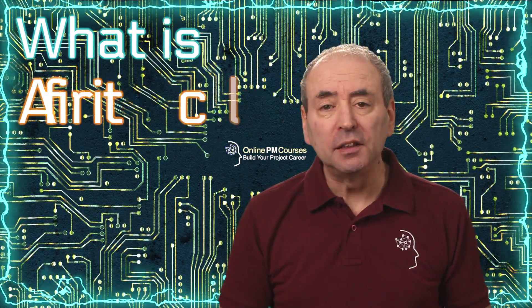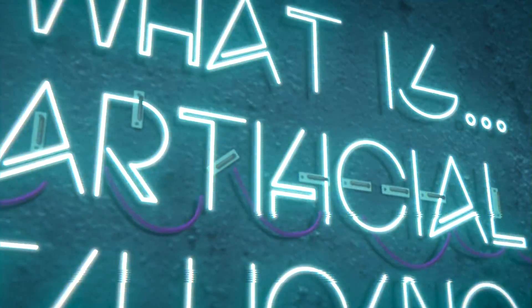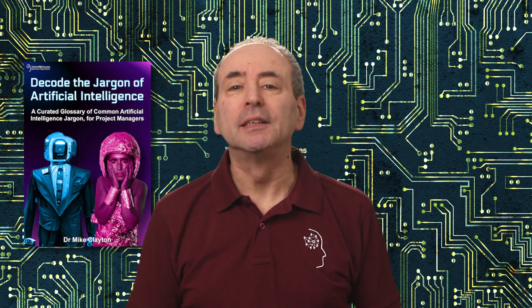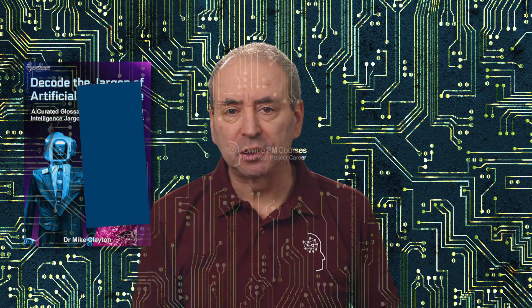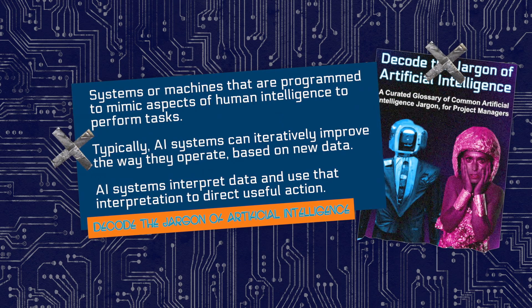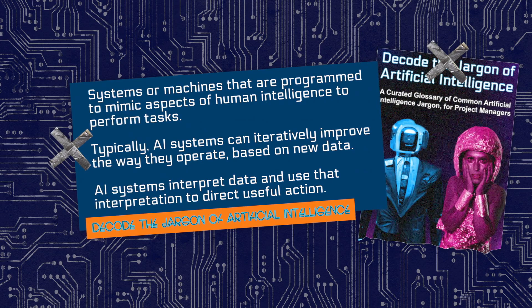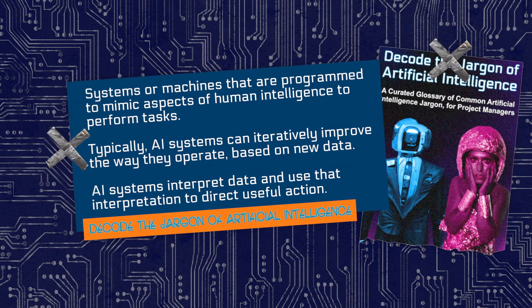In this video I want to answer the question: what is artificial intelligence? This is how I define artificial intelligence in my ebook, Decode the Jargon of Artificial Intelligence. Systems or machines that are programmed to mimic aspects of human intelligence to perform tasks. Typically, AI systems can iteratively improve the way they operate based on new data, and they interpret data and use that interpretation to direct useful action.